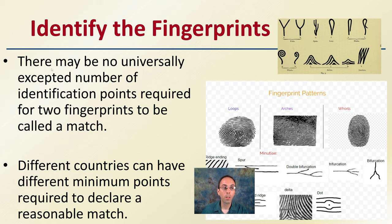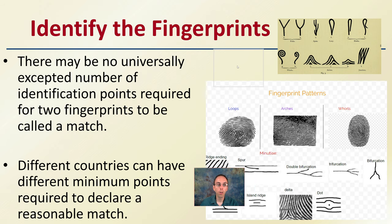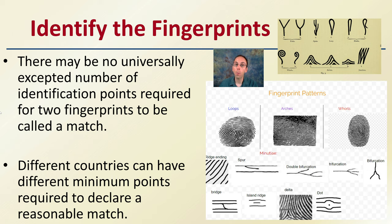There may be no universally accepted number of identification points required for two fingerprints to be called a match. Different countries have different minimum points required to declare a reasonable match. The more characteristics you find in common between the suspect print and the known or control print, the greater the chance they are a match.